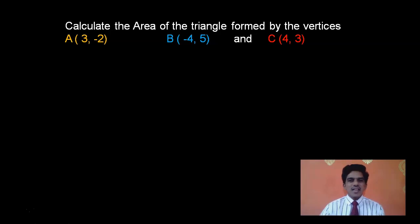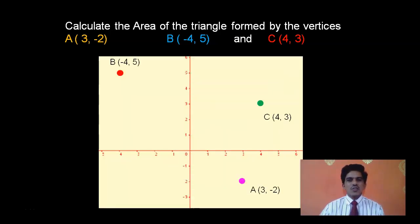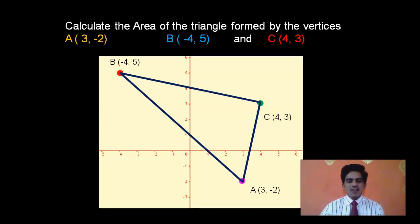Take this example: Calculate the area of the triangle formed by the three vertices A(3, -2), B(-4, 5) and C(4, 3). These are the three vertices for which you have to calculate the area. If you locate these points on the coordinate plane, this is the triangle you have. You have to calculate the area inside the boundary of the triangle A, B and C.